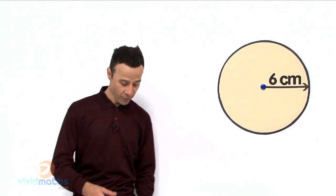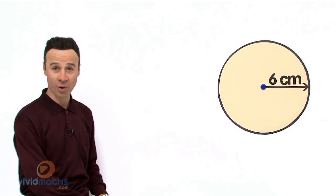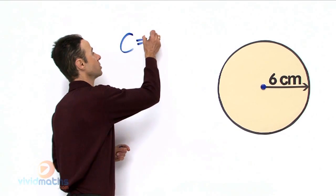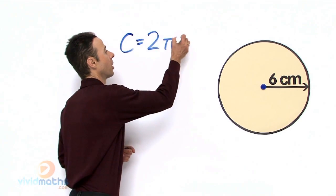The first thing we need is the formula for the circumference, which is written as: C = 2πr, where C is circumference.